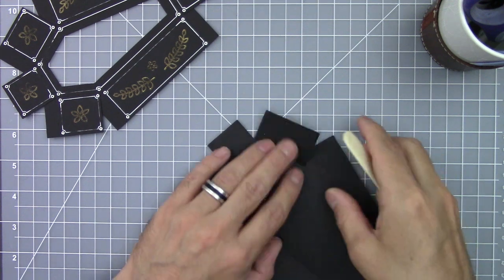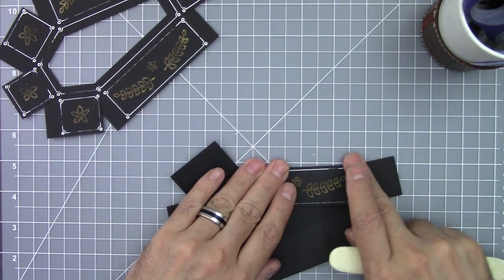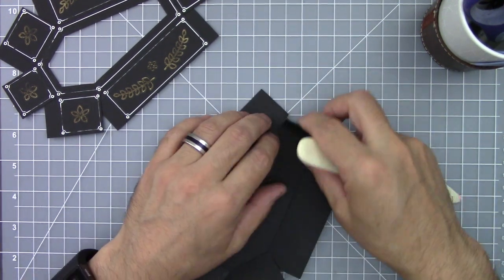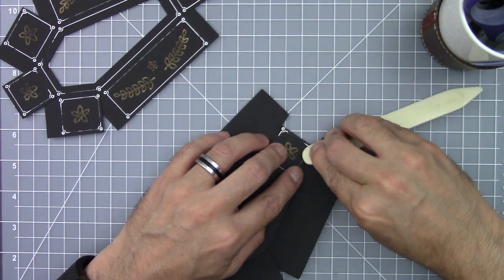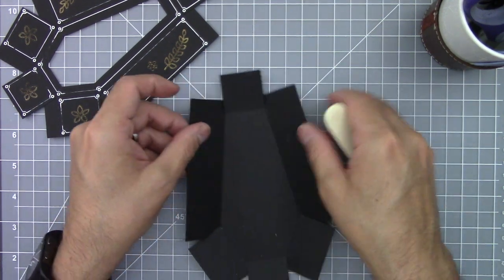Do this for all six sides. And once you've folded all the sides, start working on the gluing tabs.